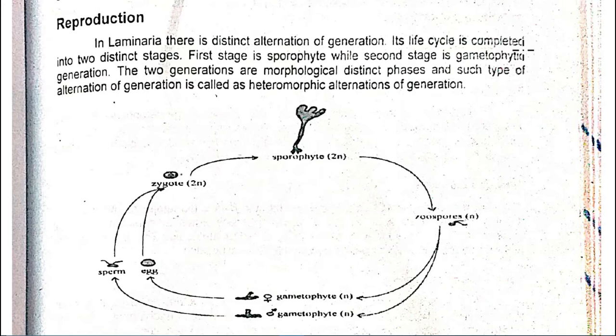The alternation of generation means sporophyte and gametophyte — both are distinct generations with different and special characteristics. Its life cycle is completed in two distinct stages: the first is the sporophytic stage and the second is the gametophytic generation. The two generations are morphologically distinct phases, and such type of alternation of generation is called heteromorphic alternation of generation.